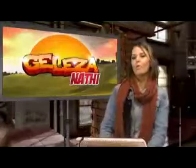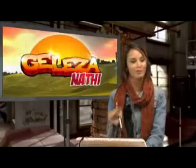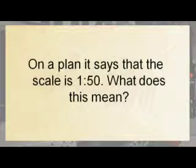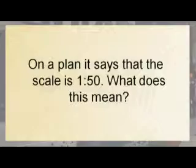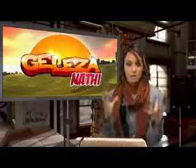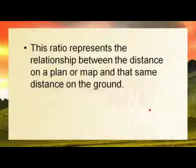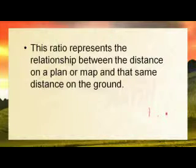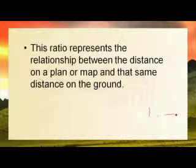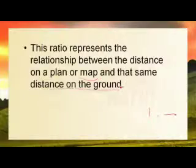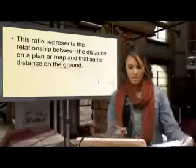What's your plan? The scale says 1 to 50 — what does this mean? That is a good question. What she said was, on a plan it says the scale is 1 to 50 — what does this mean? So this ratio — because that's a ratio, anything 1 to something else is a ratio — represents a relationship between the distance on a plan or map and that same distance on the ground. It's a relationship between the map and reality.